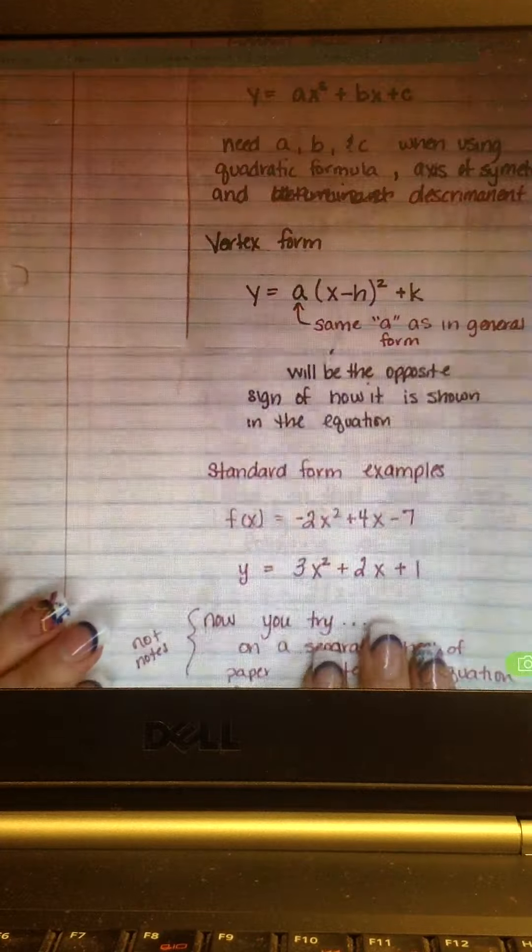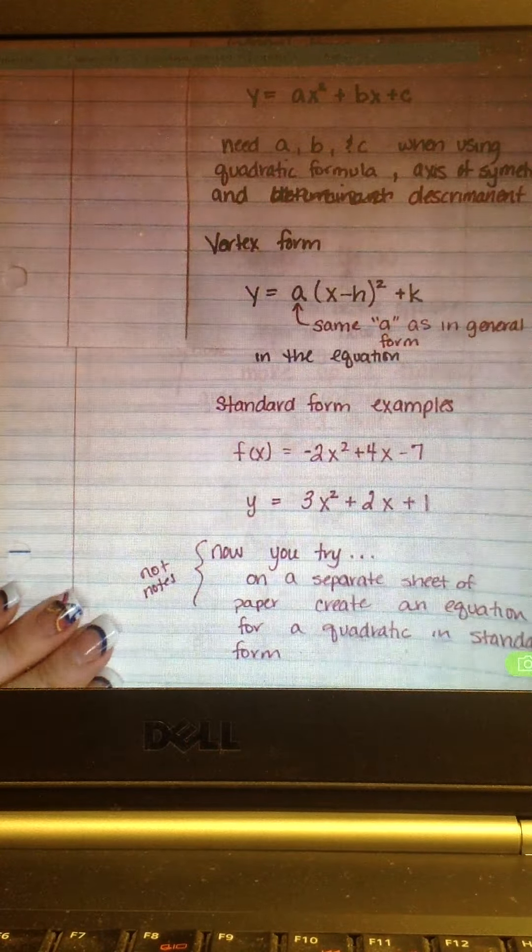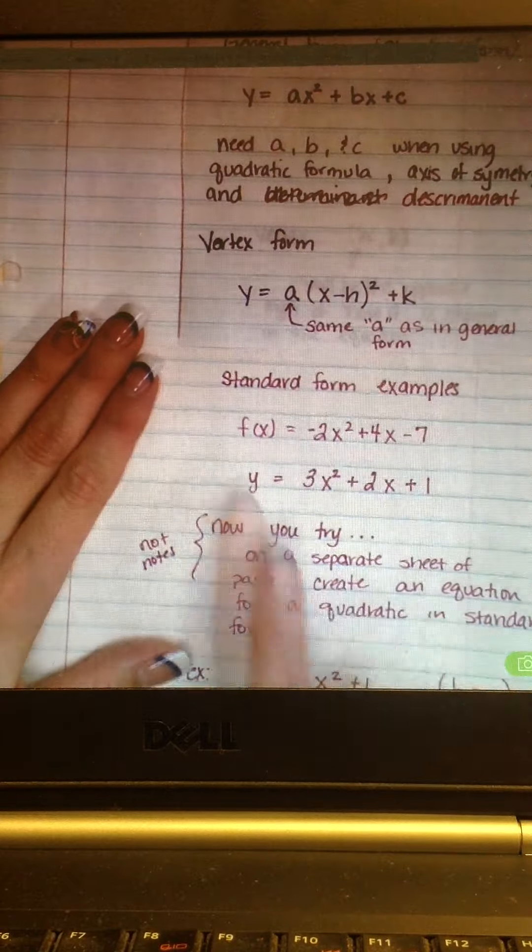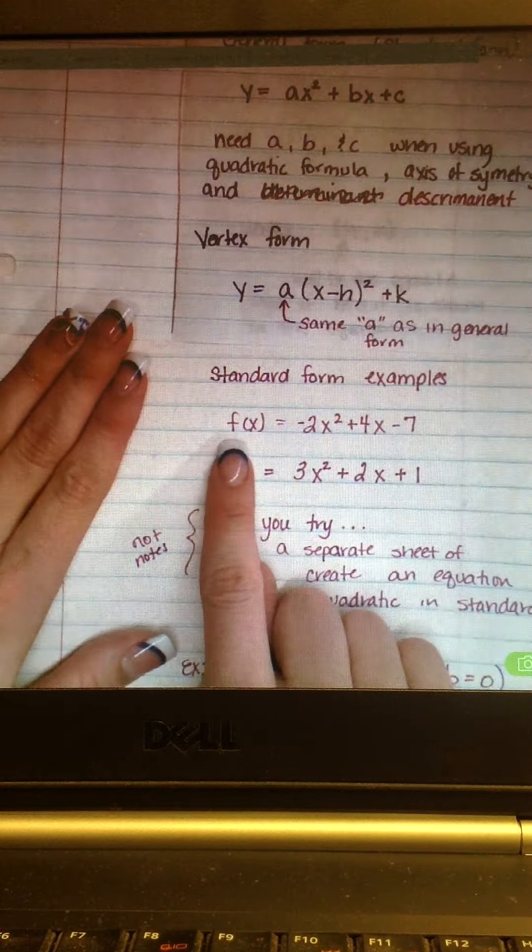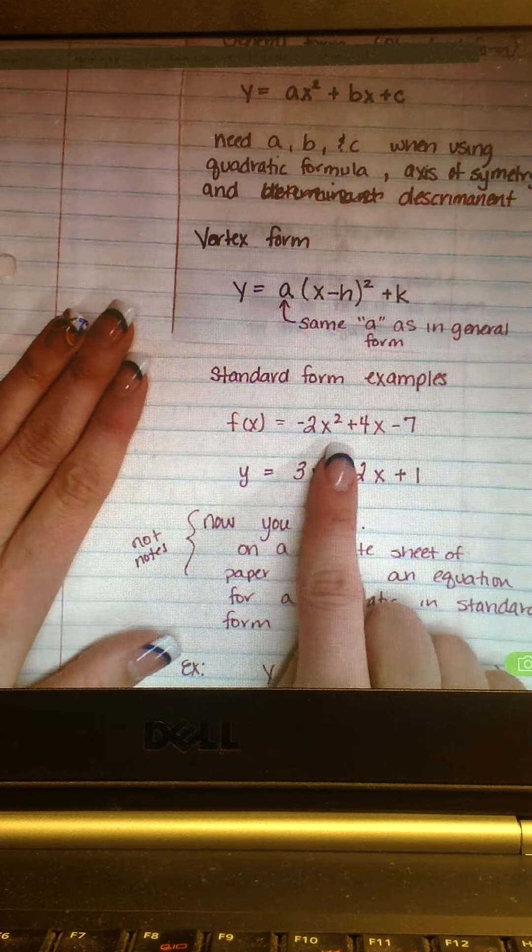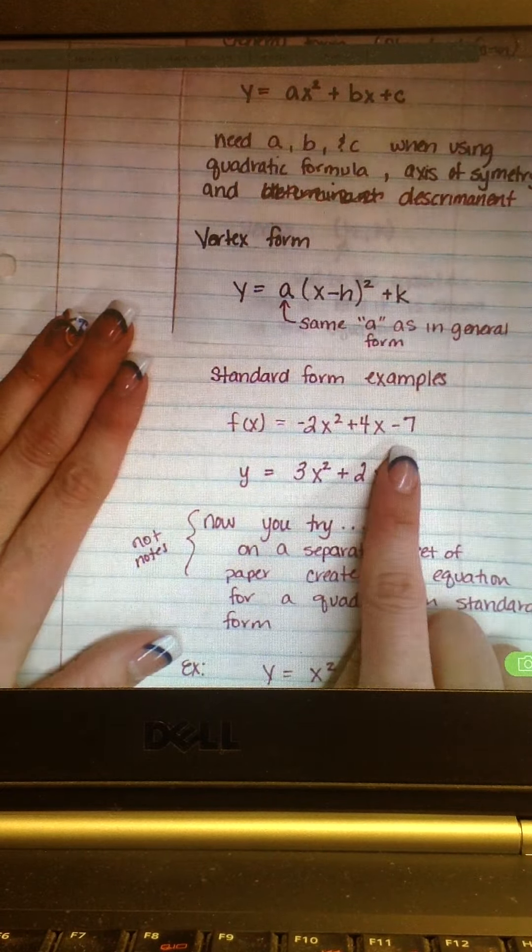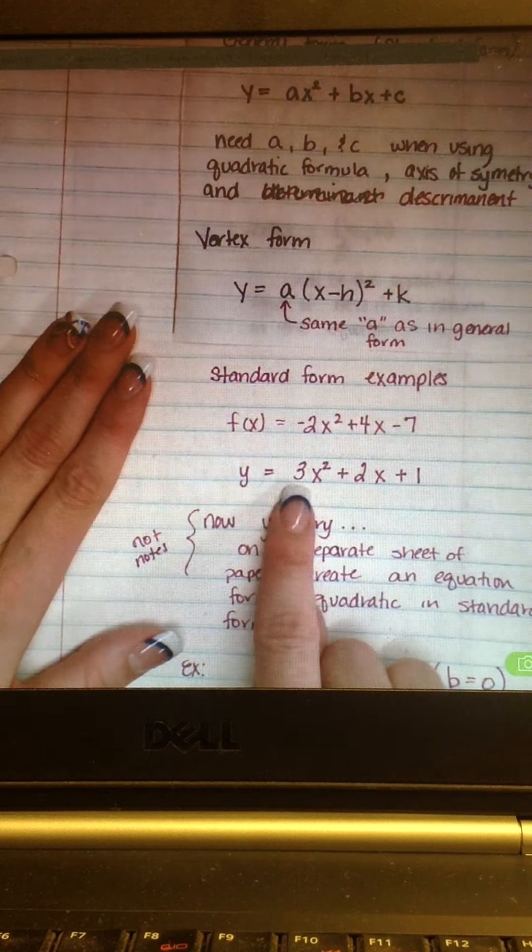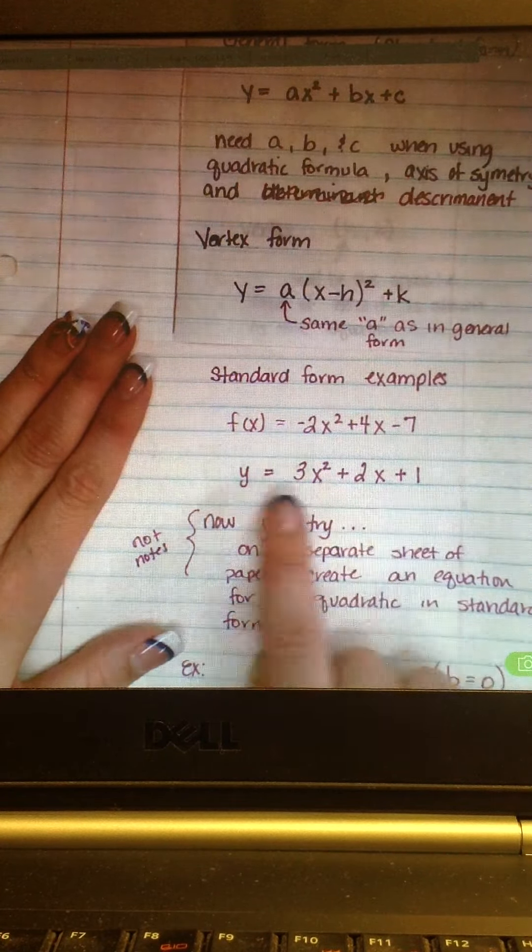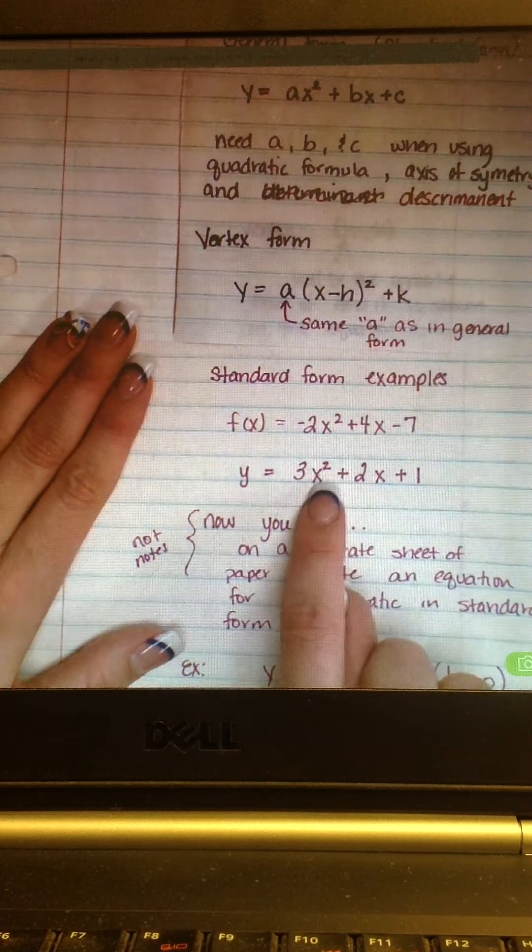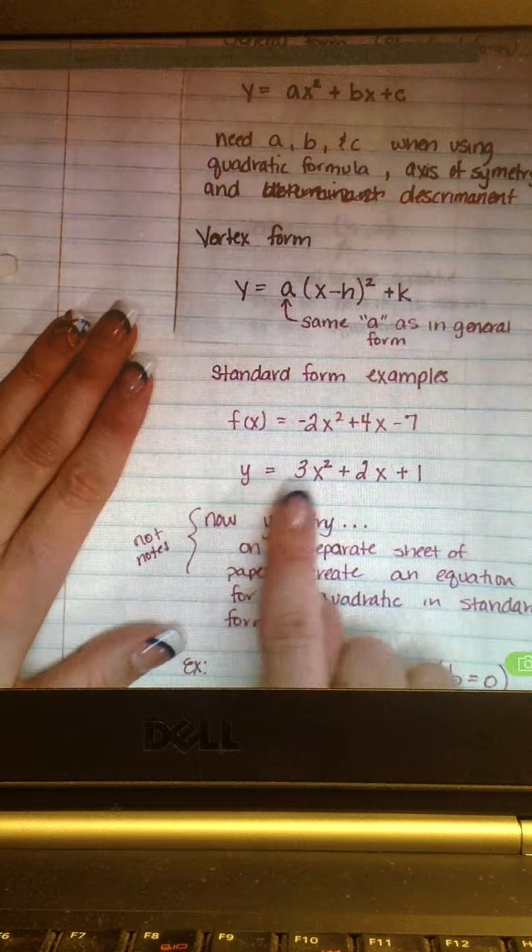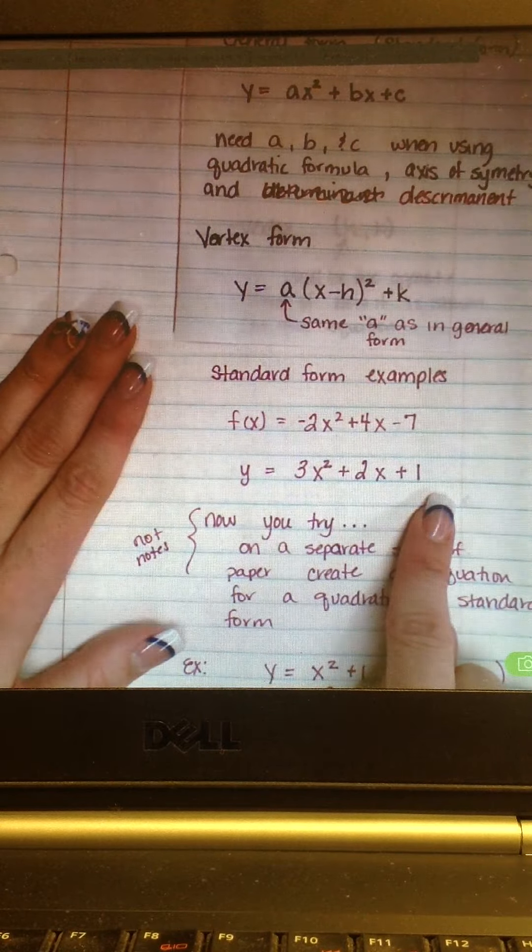So, just some examples of what these types of equations look like. Standard form examples would have something like f of x equals negative 2x squared plus 4x minus 7, or y equals 3x squared plus 2x plus 1. If I was making this up, I would have put the x squared and the x, maybe some pluses or minuses and just filled in the numbers. That's all it takes.